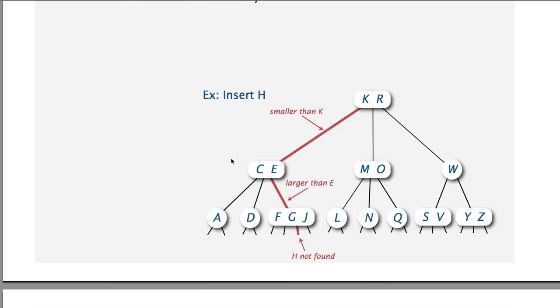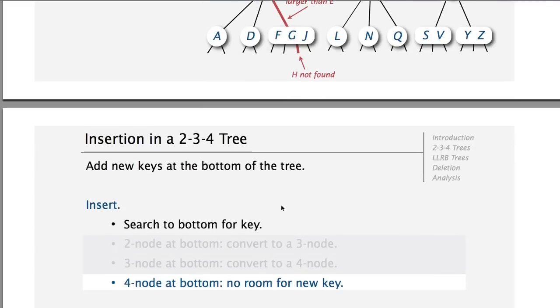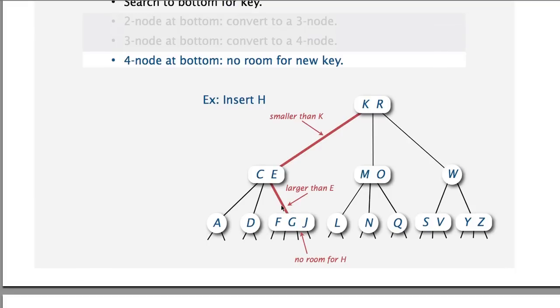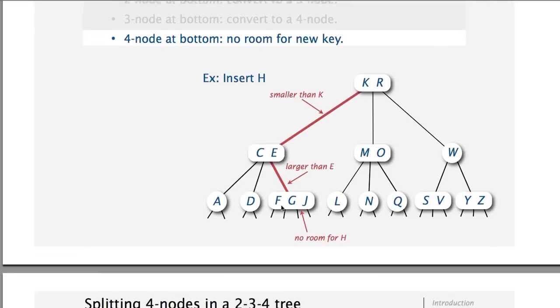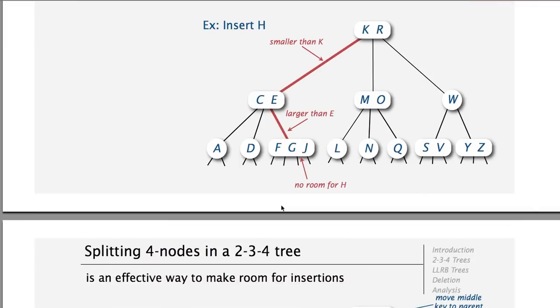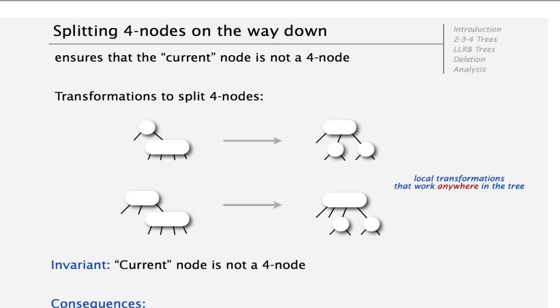So that's what we need to do. There is no room for the H. We need to somehow find a way to reorganize the tree without making the nodes have different lengths. So now we get to the heart of the algorithm, which is how do we deal with the 4-nodes? So the main thing here is that we deal with 4-nodes on the way down. So we basically split them up before we actually need to add anything to them. And that makes things easier.